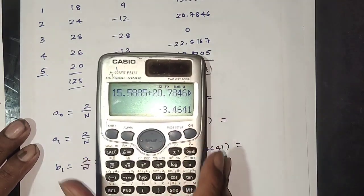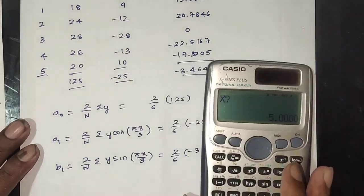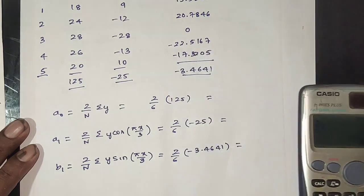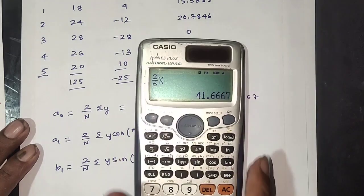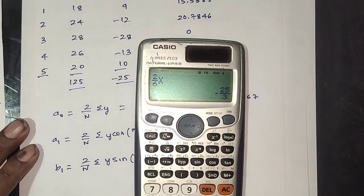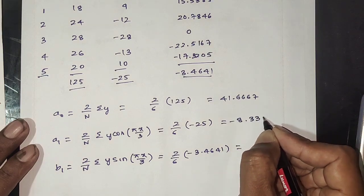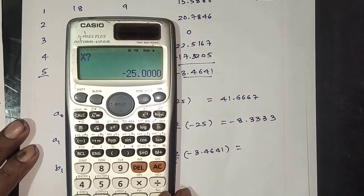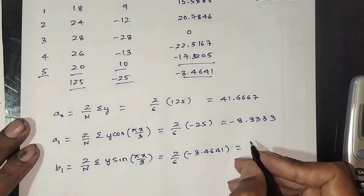We compute 2/6 into x on the board. First x value: 125 → 41.3667. X value minus 25 → minus 8.3333. X value minus 3.4641 → minus 1.1547.